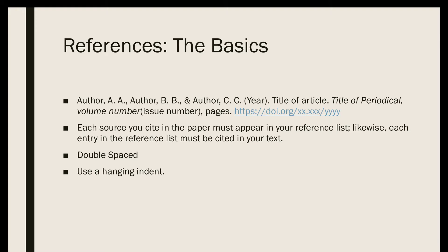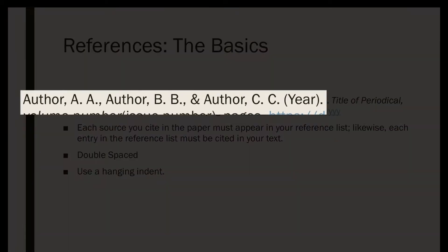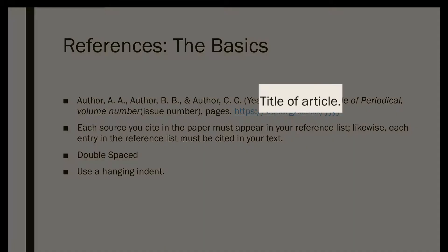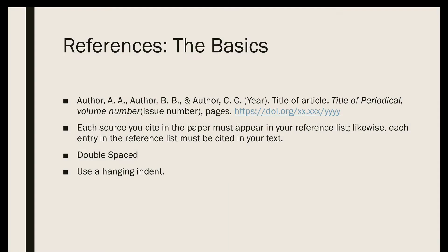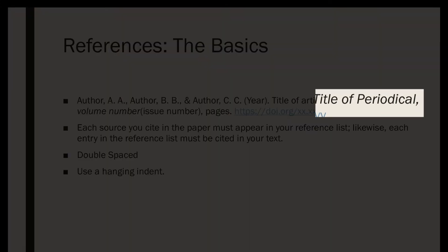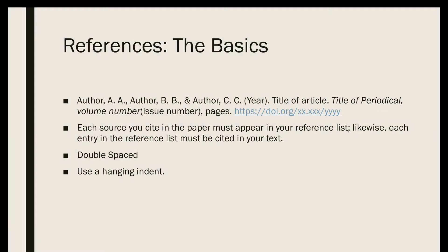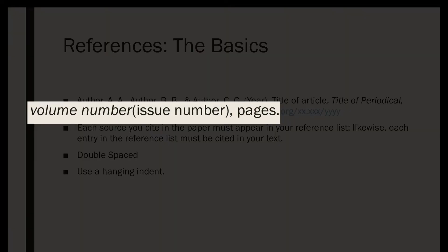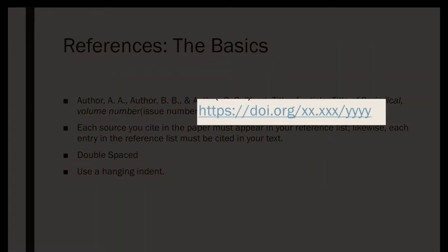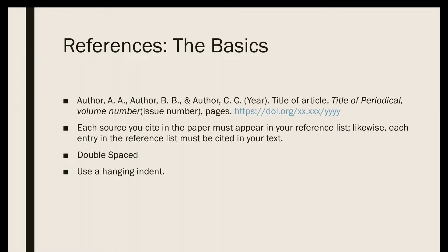The reference for a journal article will start with the author, followed by the publication year, the title of the article, the title of the periodical or journal, the journal's volume number, the issue number, the page range, and then a DOI. We'll talk more about each of these pieces.